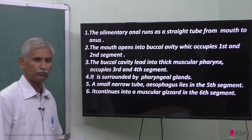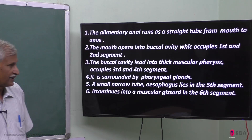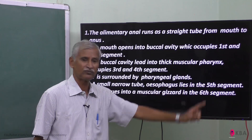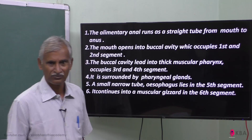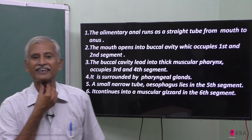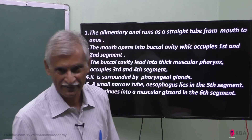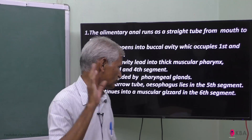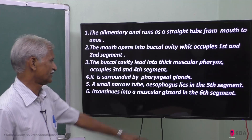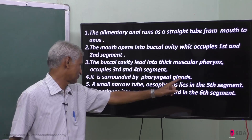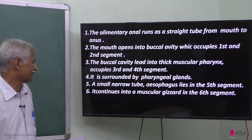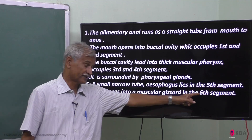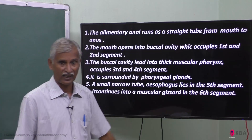The small narrow tube after the pharynx is the esophagus, which lies in the fifth segment. It is just a muscular tube. It continues to a muscular gizzard in the sixth segment.